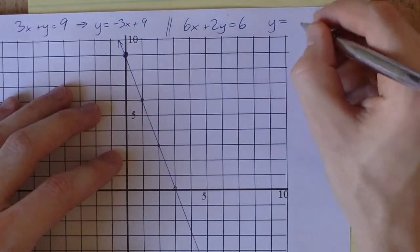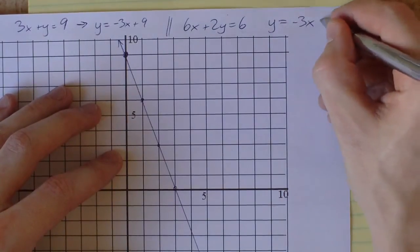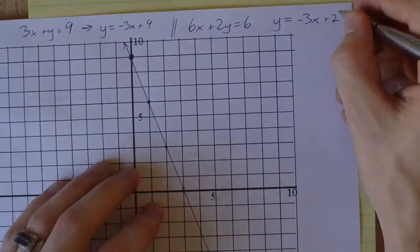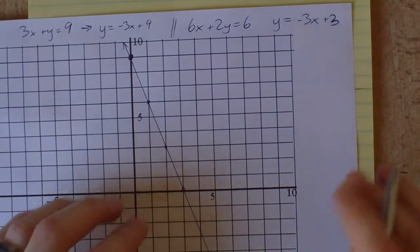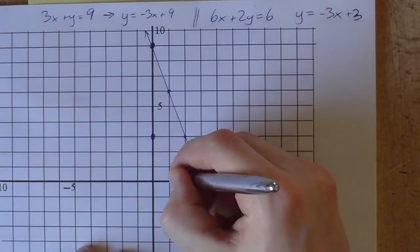Our second equation was 6x plus 2y equals 6. We solve that for y and get negative 3x plus 3. Let's graph that line starting at 3, slope of negative 3.